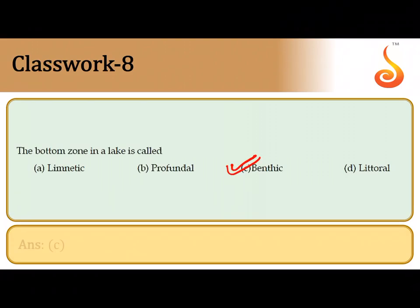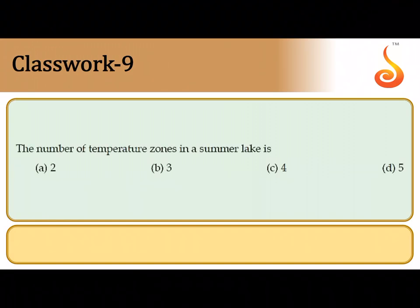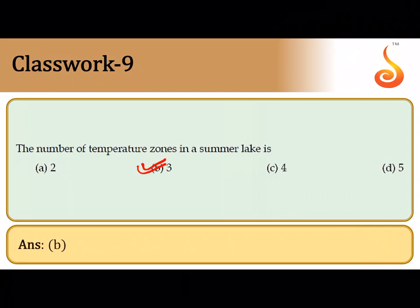The number of temperature zones in a summer lake is three. The superficial zone is called the epilimnion, the middle zone where there is a sudden large drop in temperature is called the thermocline, and the lower, comparatively colder zone is referred to as the hypolimnion. So there are totally three temperature zones in a typical summer lake.